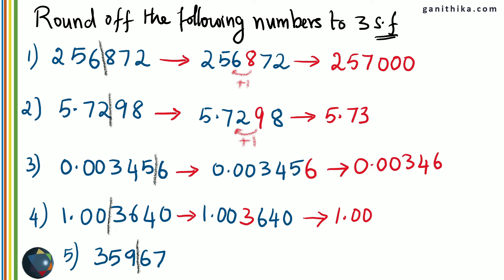For the fifth example, 35967: 3, 5, 9 are the first three significant figures. The fourth significant figure is 6, which changes 359 to 360, and the last two digits become zeros. Therefore, rounding 35967 to three significant figures gives 36000.